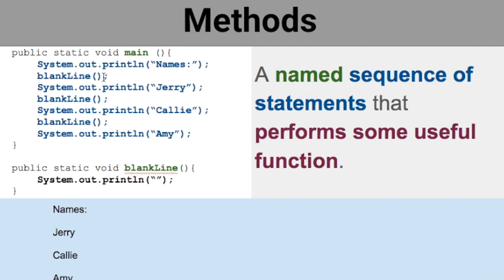Then we have this thing here called blank line — it's calling blank line, which is another method. I named it blank line, similar to the book, but I liked blank line better. You want to pick a name that makes sense so that when you look at it, it's logical. That's why you get to decide what you name things.